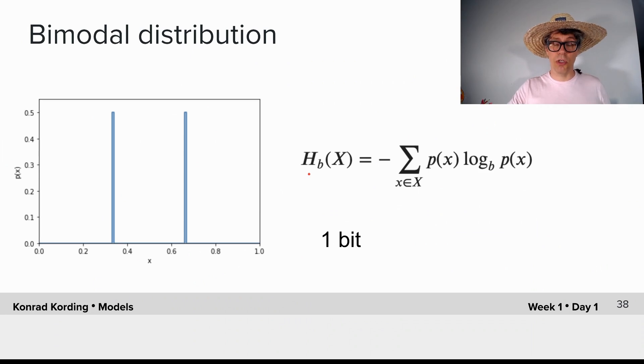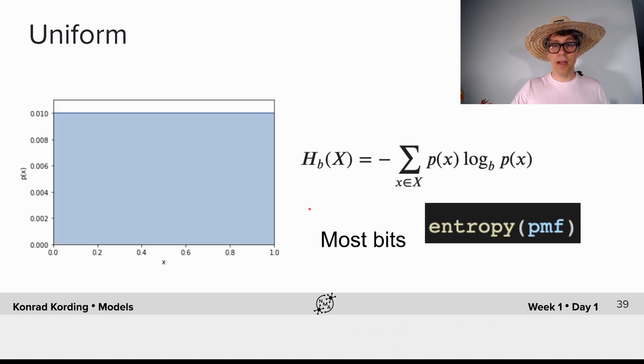If we have a bimodal distribution, we expect that it tells us 1 bit per observation. Why was that going to be the case? The probability for each of the peaks will be 0.5. The log to base 2 will be minus 1. We have a minus here. So each of them will add 1. So we have 1 plus 1. Each of them are weighted with 0.5. Therefore, what we have here is 1 bit of information per inter-spike interval.